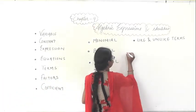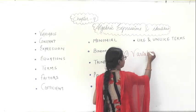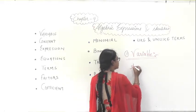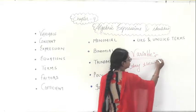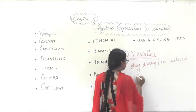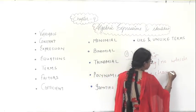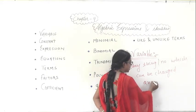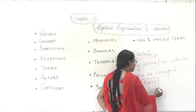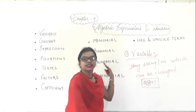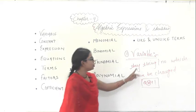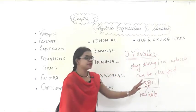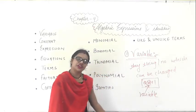The very first topic is: what is a variable? Variable means anything — a number which can be changed. Suppose if I write 2x plus 1, here the value of x can be changed. It can be 1, 2, 3, 4, whatever. So here, variable means x. So 2x plus 1 is an expression and x is the variable here.